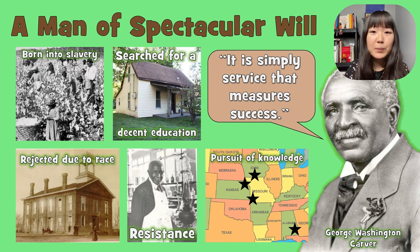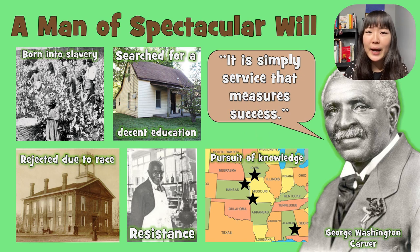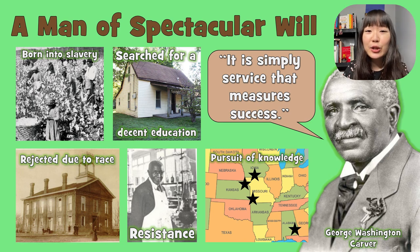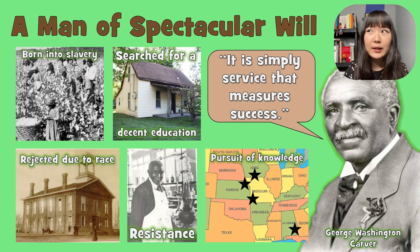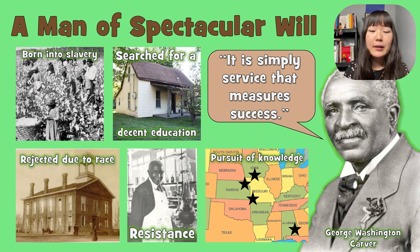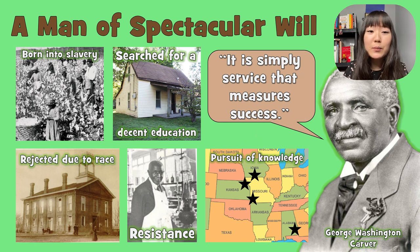Starting from the top, he experienced a lot of hardship and turmoil because he was born into slavery, then he was taken from his family, they were sold, and they don't know what happened to his mom — eventually he managed to escape. He searched continuously for a decent education. One of the most famous stories is that the school system serving him didn't have enough knowledge to give him, so he had to look for another school. The nearest school that would accept African-American children was eight miles away, and George Washington Carver commuted eight miles just to get an education.